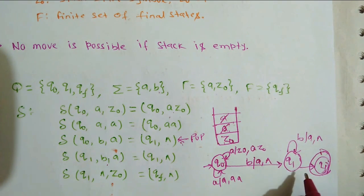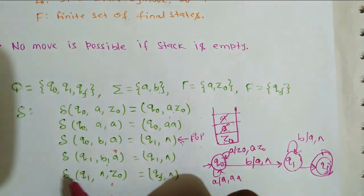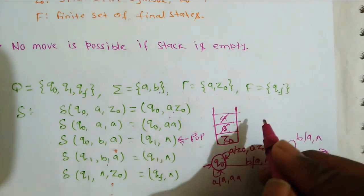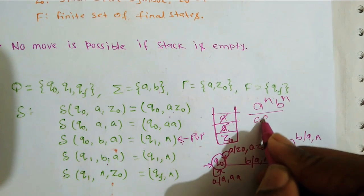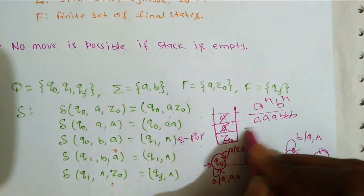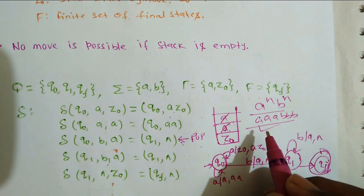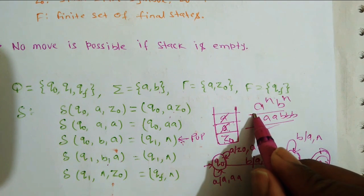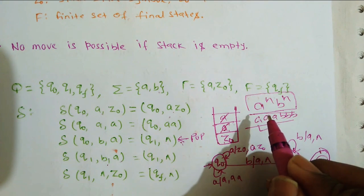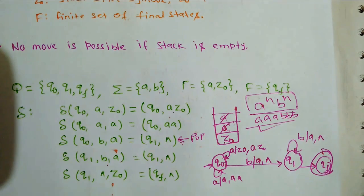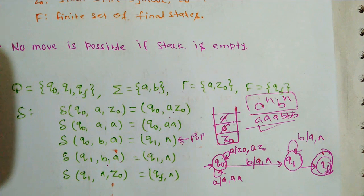This is the way to design a PDA machine. These transitions were given for the language a^n b^n. You can verify with any string — consider 3 a's and 3 b's, which will be accepted. This language is a context-free language, not a regular language, so it is not accepted by a finite state machine. I hope you understand the fundamental concept of PDA. In the next video we will have many more examples. Thank you.